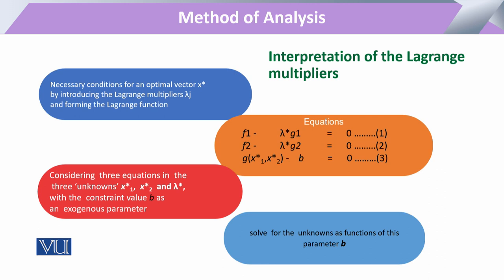Looking at the previous module, we need to see the necessary conditions — the equations which we have. When we have an objective function and a constraint, the third equation comes from the constraint itself. So when we have three unknowns, we have three equations to solve.